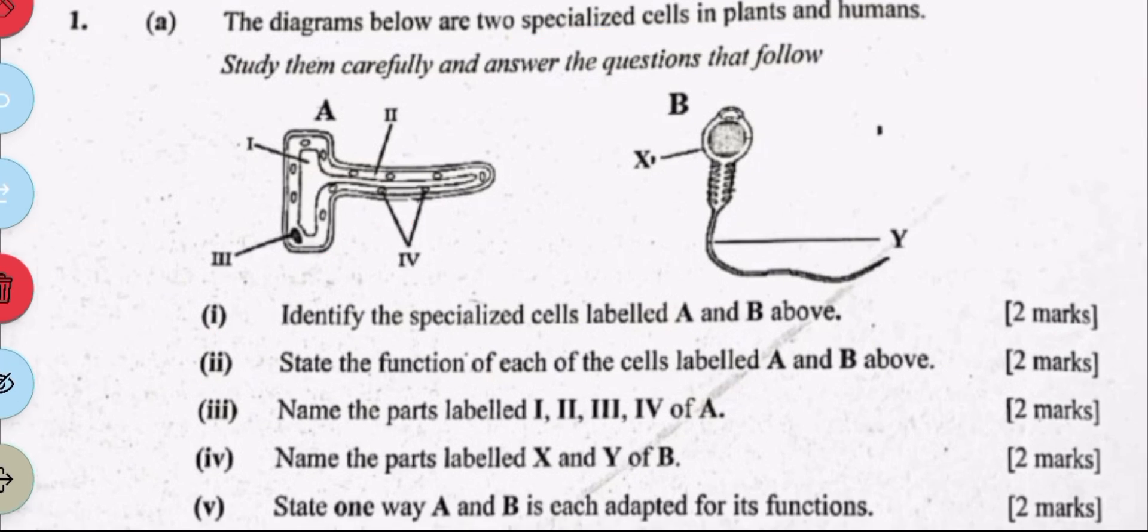Function of A is to absorb water and nutrients from the soil. And the function of B is adapted to fertilizing the female gamete which is the egg. Then part III is asking us to label the parts of A.